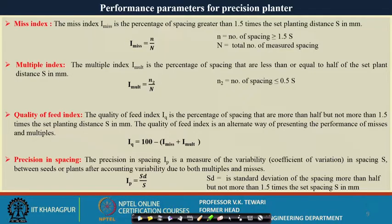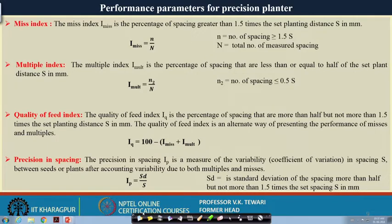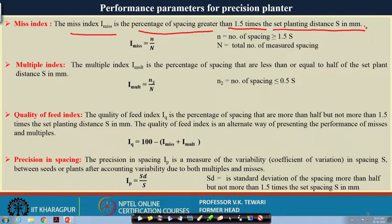The performance parameters of a precision planter include the miss index: the percentage of spacing greater than 1.5 times the set planting distance (in millimeters). We need to design based on literature for a particular seed, because we do not want several misses — otherwise this indicates bad equipment performance.